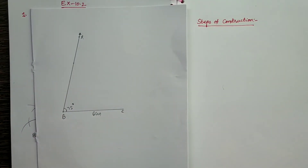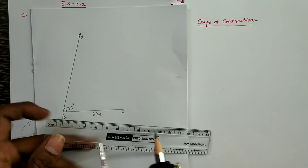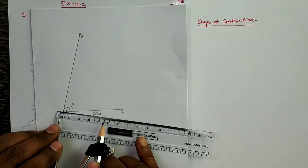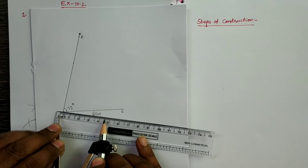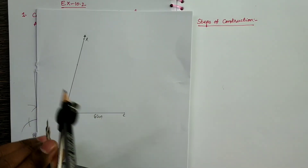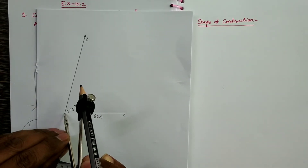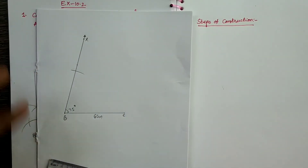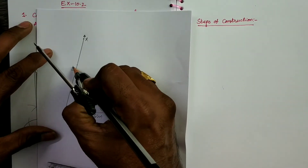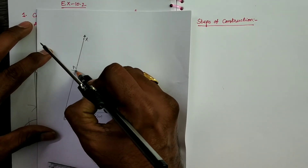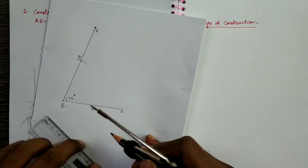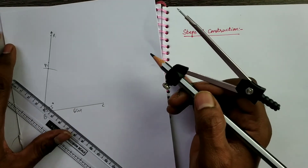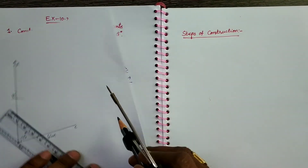Next take 4.5 cm using the compass. With B as center and 4.5 cm as radius, draw an arc. The intersecting point of the arc and ray BX represents point A. Now join AC.